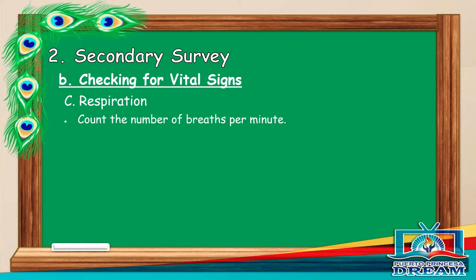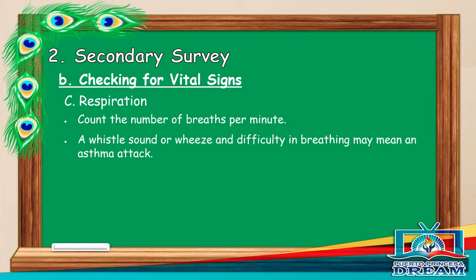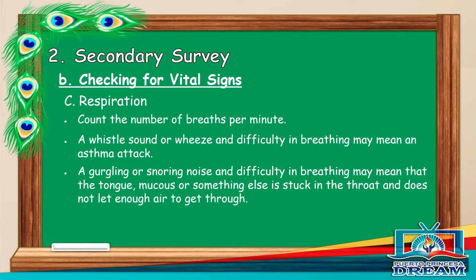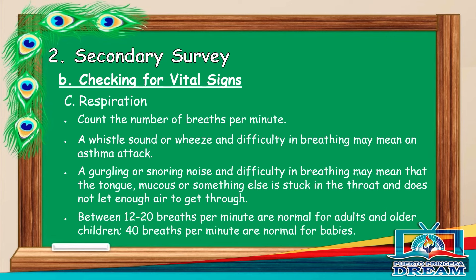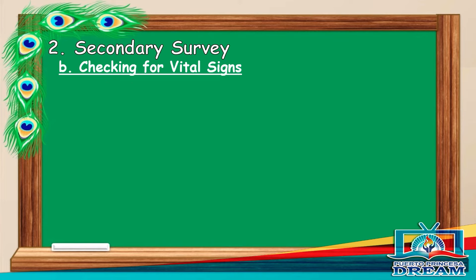Respiration. Count the number of breaths per minute. A whistle sound or wheeze and difficulty in breathing may mean an asthma attack. A gurgling or snoring noise and difficulty in breathing may mean that the tongue, mucus, or something else is stuck in the throat and does not let enough air through. Between 12 to 20 breaths per minute is normal for adults and older children. 40 breaths per minute is normal for babies.